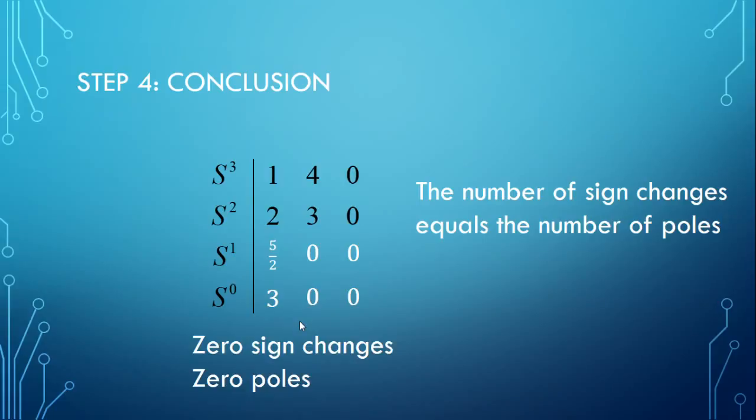If we had a negative in there, we'd have a sign change and then it would be changing back. So we'd have 2 poles. So the number of sign changes equals the number of poles. Remember that.